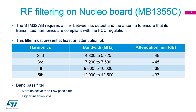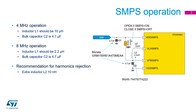As we mentioned, the STN32WB requires a filter between its output and the antenna to ensure that its transmitted harmonics are compliant with the FCC regulation. The following rejections have to be fulfilled for passing the certification process. These are quite strict, therefore you have to care about well-performed matching and filter selection. The integrated filter on the nuclear board is a band pass filter, more selective than a low pass filter. Thanks to this filter it is possible to use the nuclear board in an environment more disturbed by neighboring communication bands, in the presence of higher insertion loss.